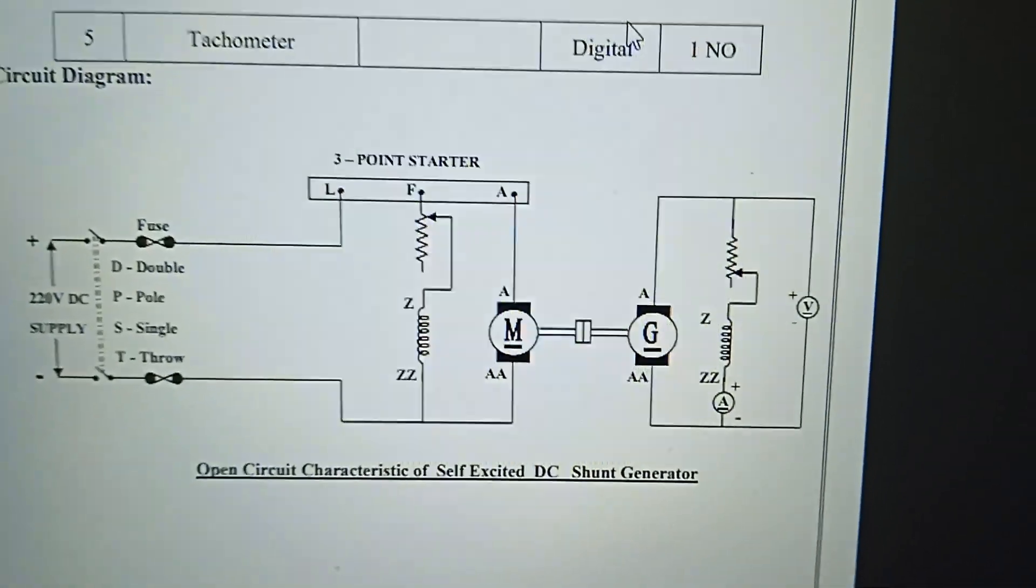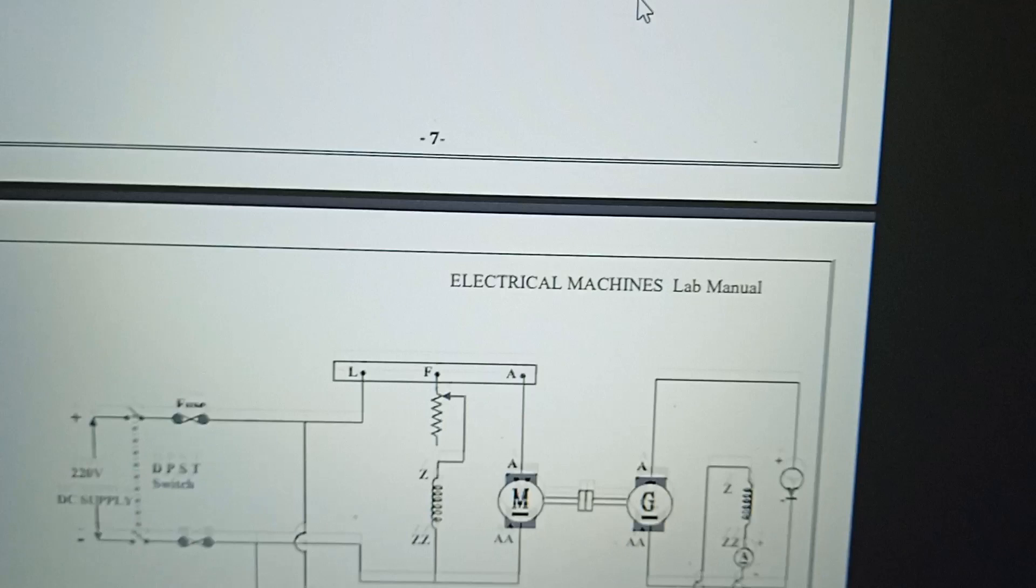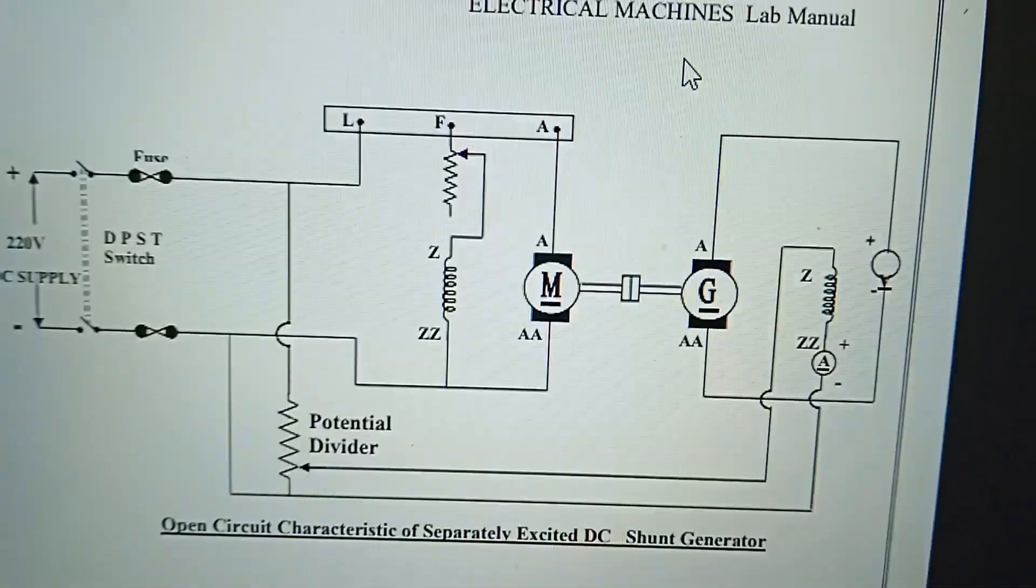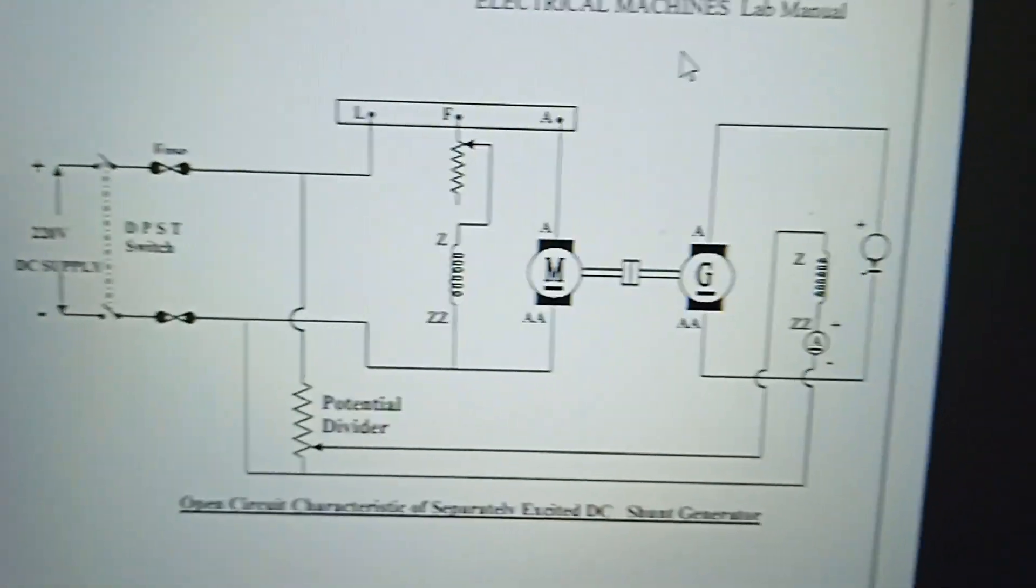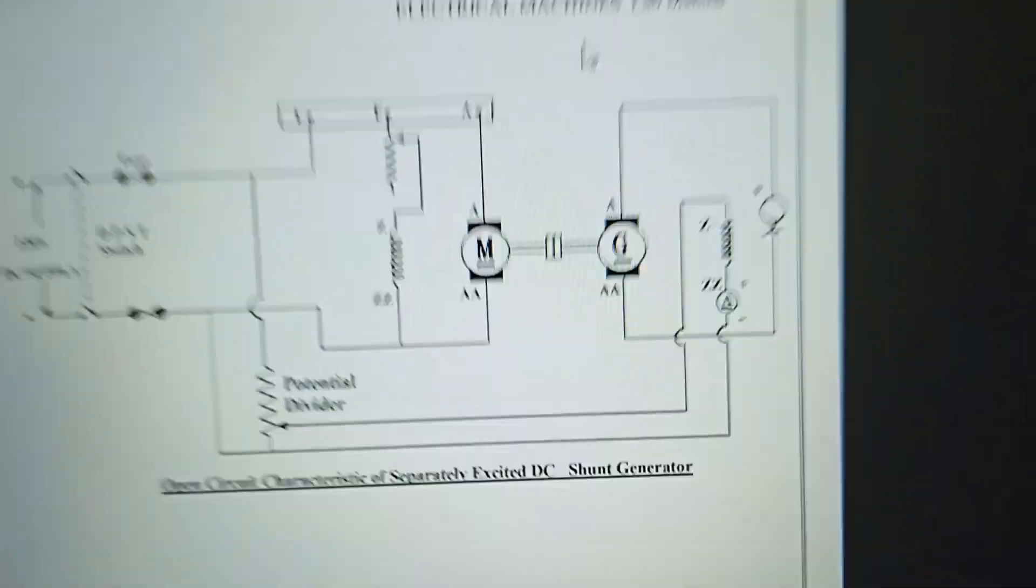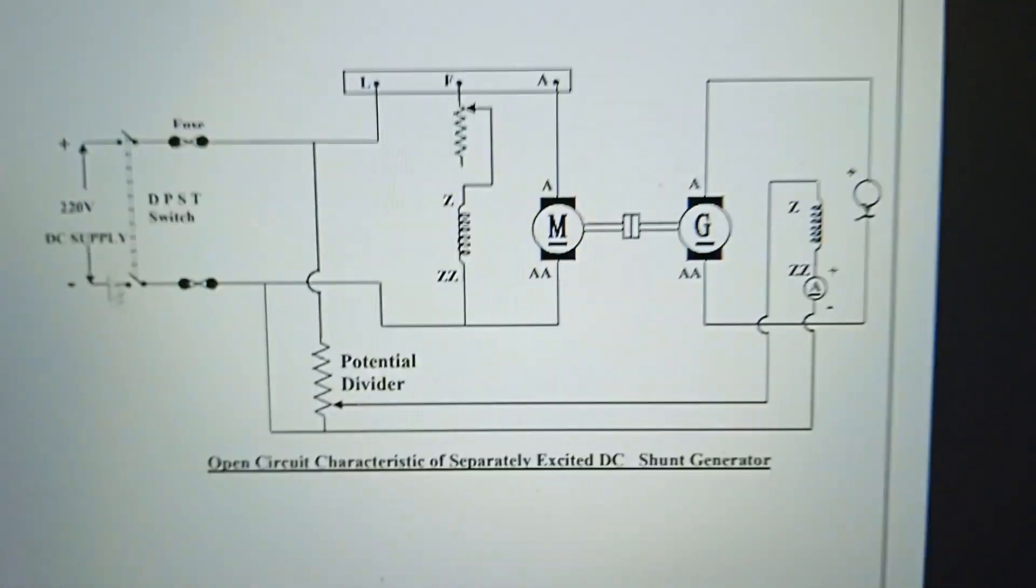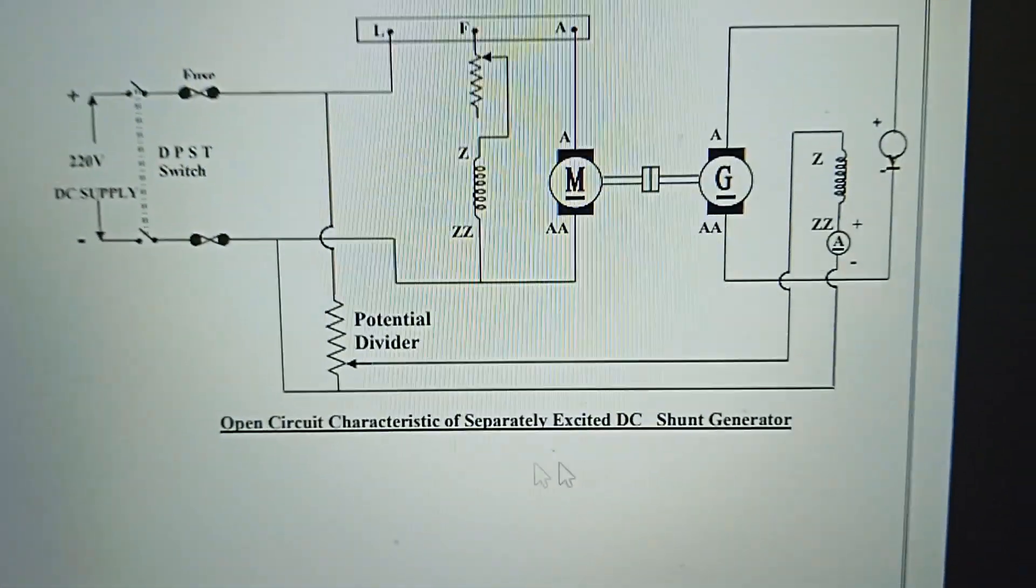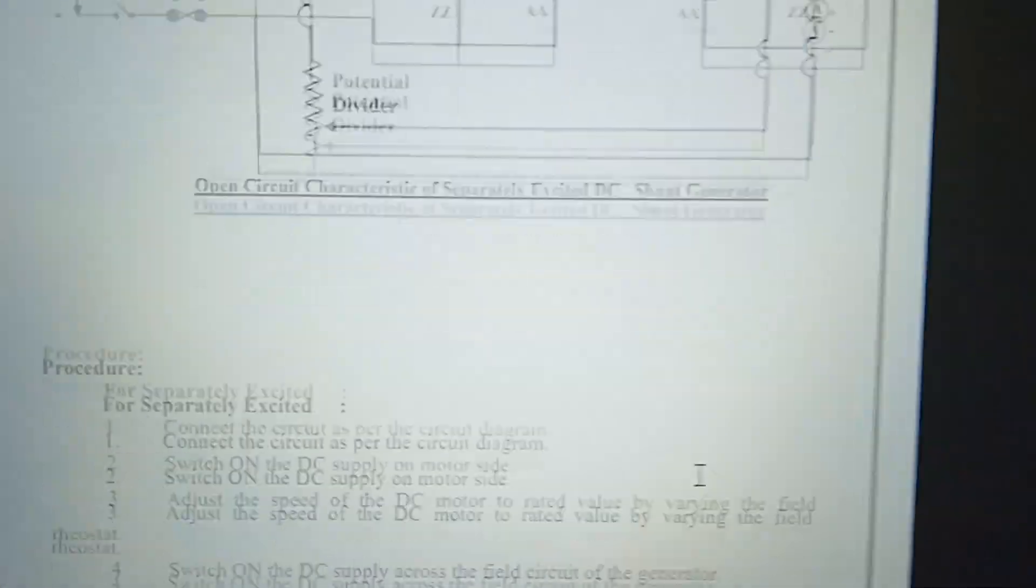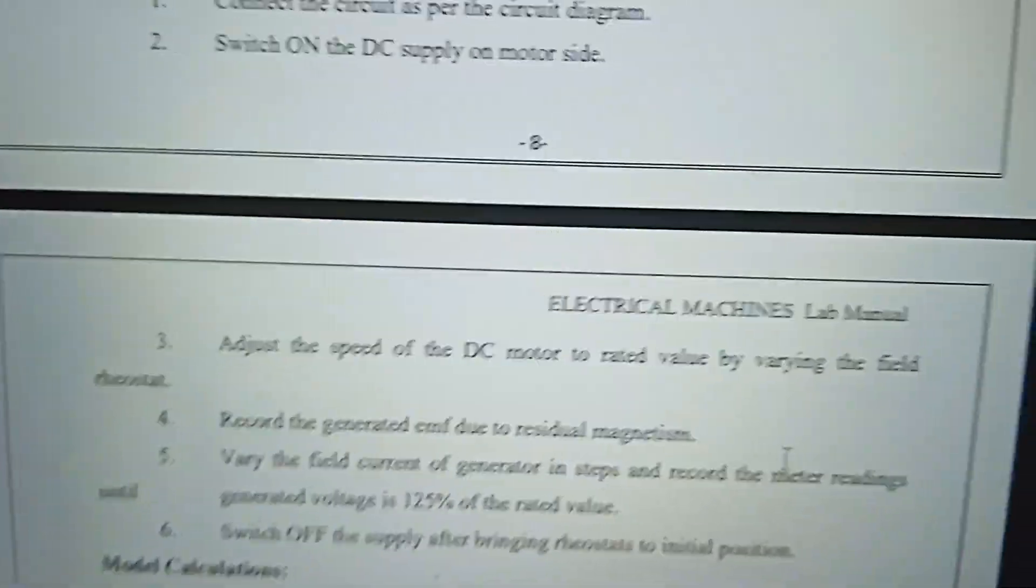In a separately excited generator, the field supply comes from an external source. The field supply uses a potential divider or system. So this is separately excited. Look at the self-excited process circuitry. This is a DC motor at rated speed.